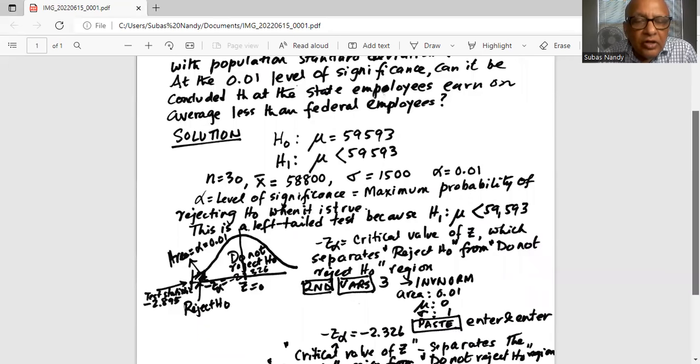So first we will find out the minus Z alpha, which is the critical value in the left tail, which separates the reject H0 region from do not reject H0 region. So we will be using a TI-84 calculator. Second, press the second button, then the verse, which is in the third row, then select number three invNorm.